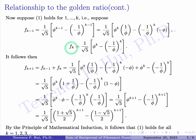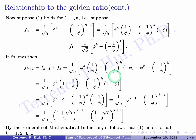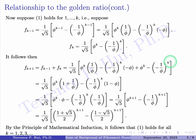Now that we have F_k and F_{k−1}, let's plug into F_{k+1} = F_{k−1} + F_k. This gives (1/√5) times the quantity: φ^k·(1/φ) − (−1/φ)^k·(−φ) + φ^k − (−1/φ)^k. There are four terms to combine.